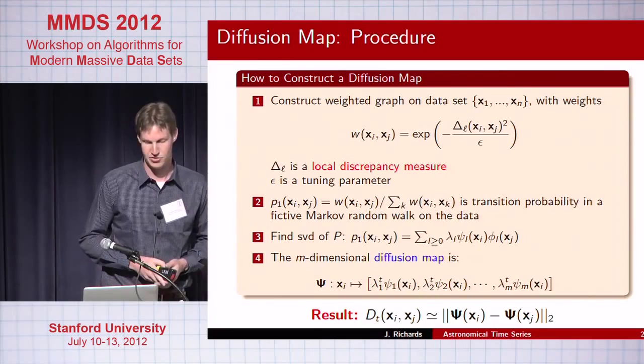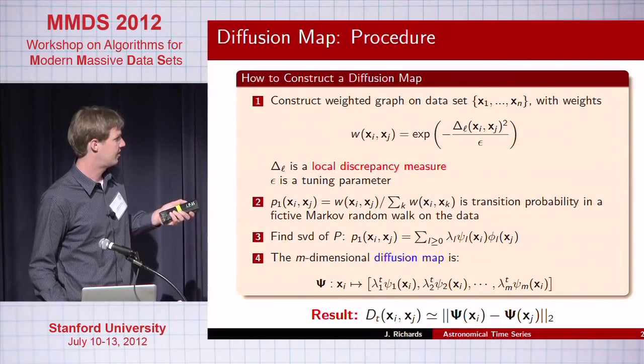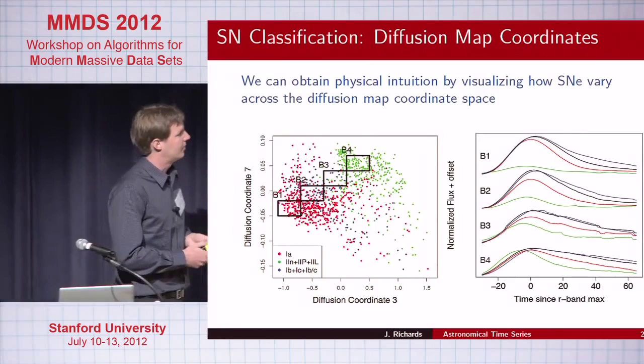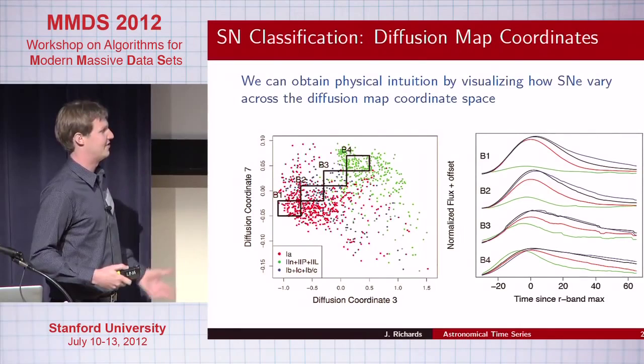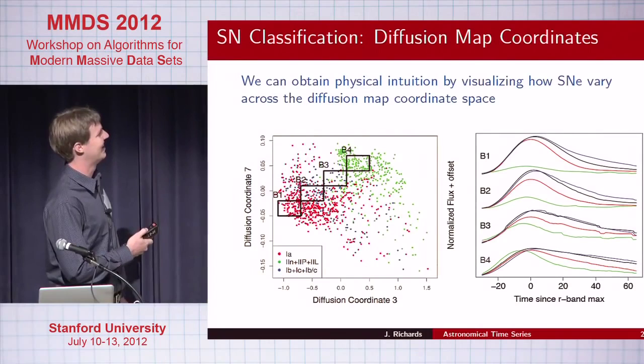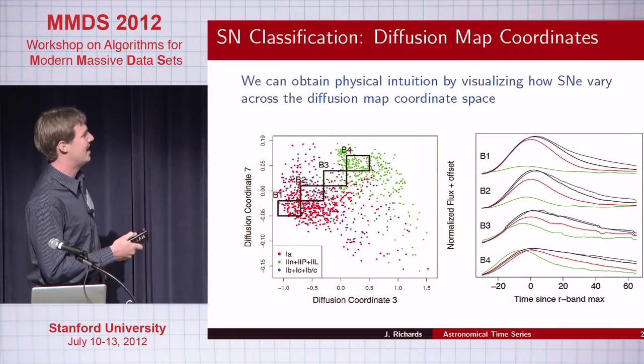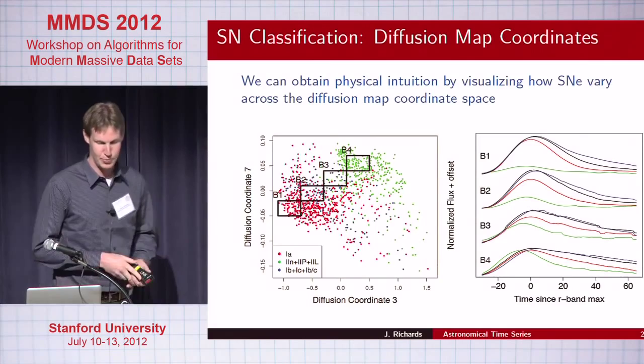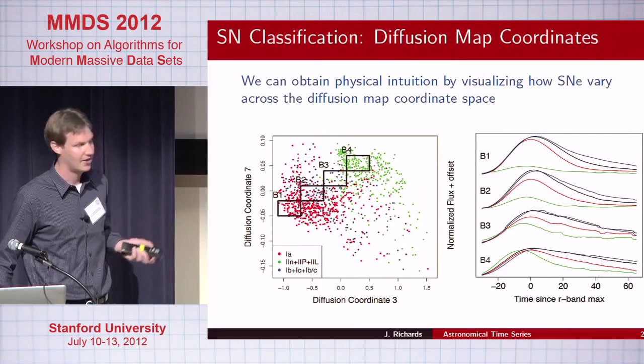We use these coordinates as features in a classifier. Even prior to doing classification, astrophysicists are always interested in physical interpretation — they want to know what diffusion coordinate seven means. I tell them it has no meaning; you just have to look at what the light curves look like as you step across this space. We can do that and they're pretty satisfied with how these average light curves look. If the ultimate goal is prediction, we build a classifier in this high-dimensional space, and we actually do pretty well.